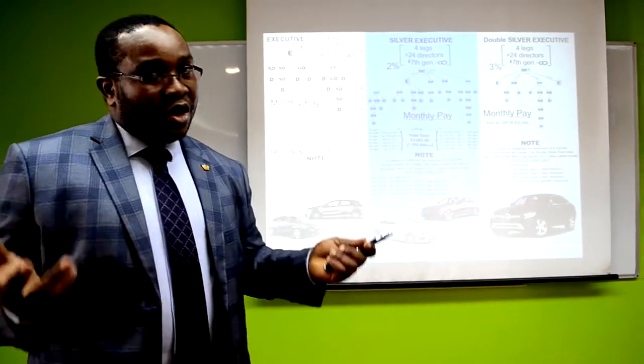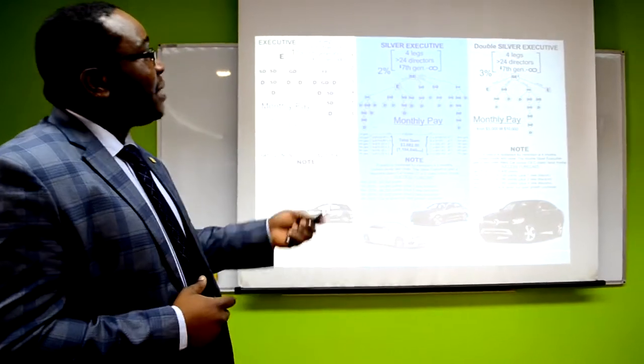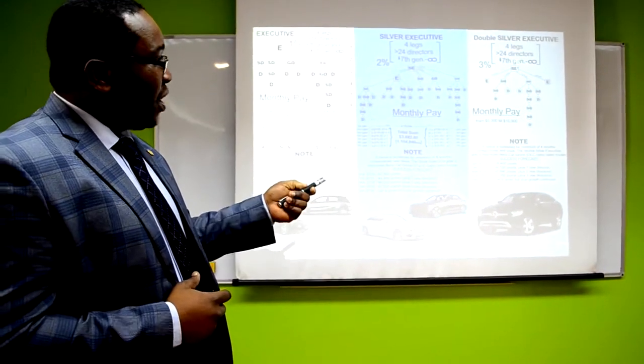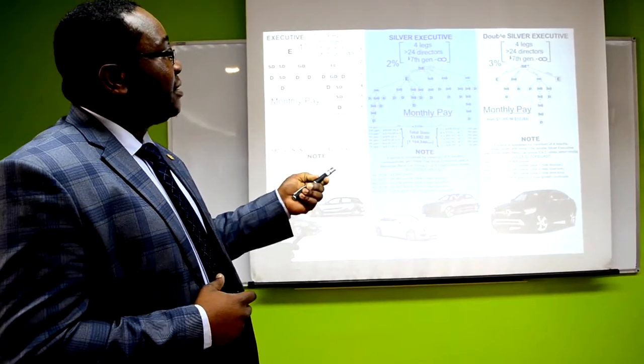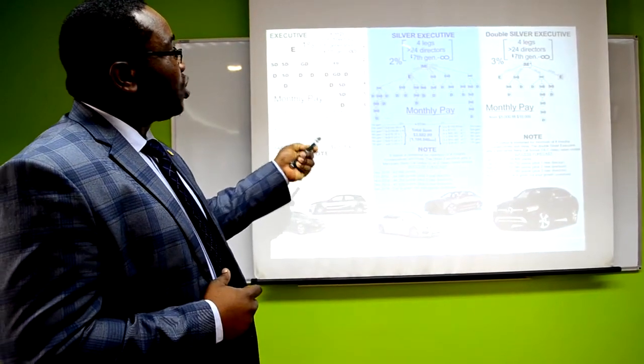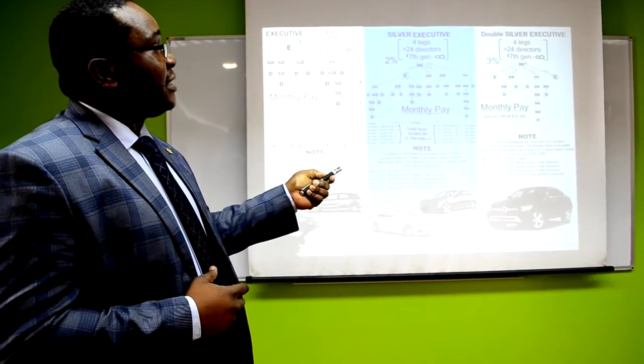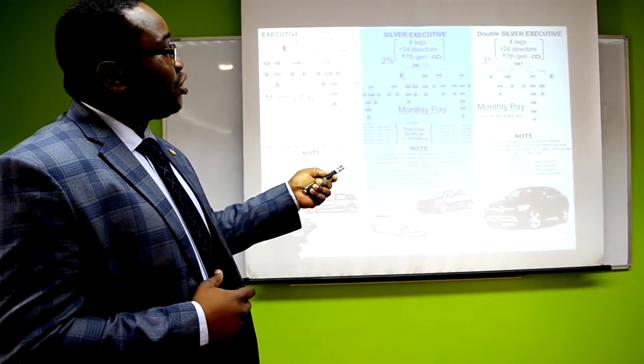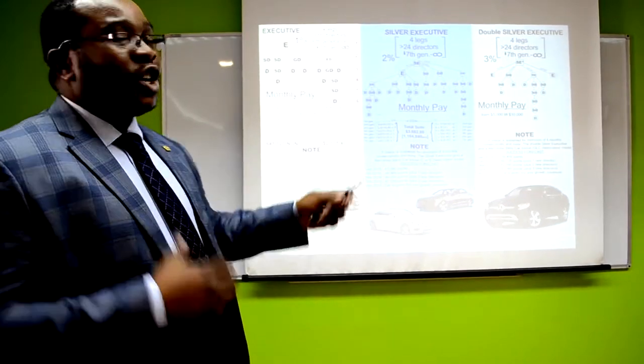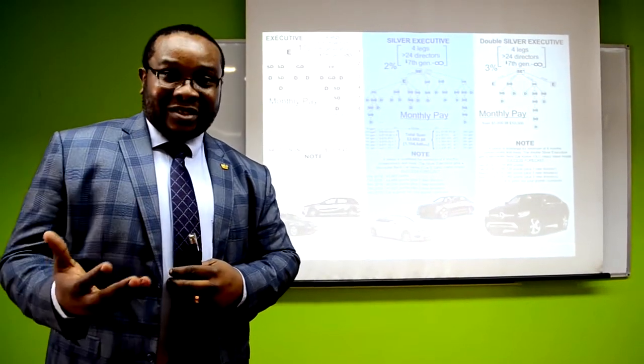Double silver executive, four-legged man or woman, 24 directors. Here, you enjoy 2% of the seventh generation downwards. Here, again, it's a different level, having 3%. So as you move, you increase with passion. You increase with wealth. So this is how you become a millionaire.